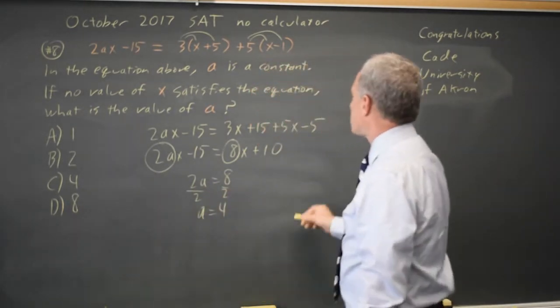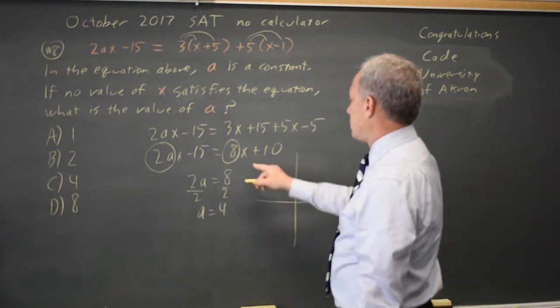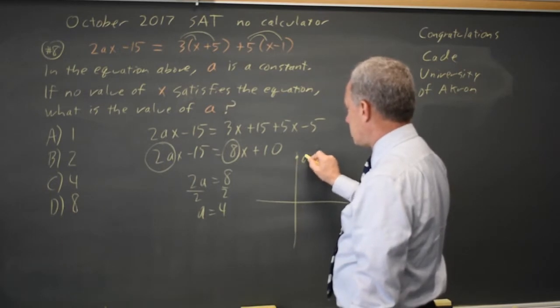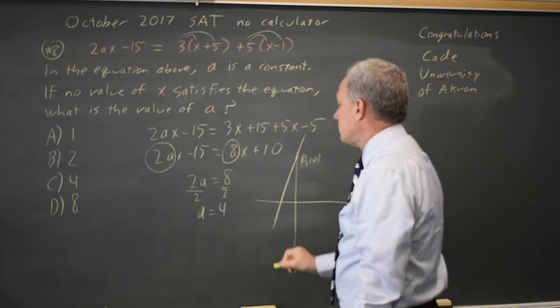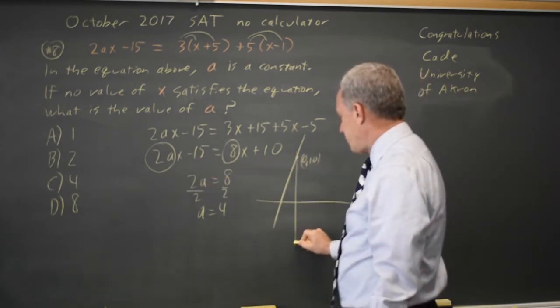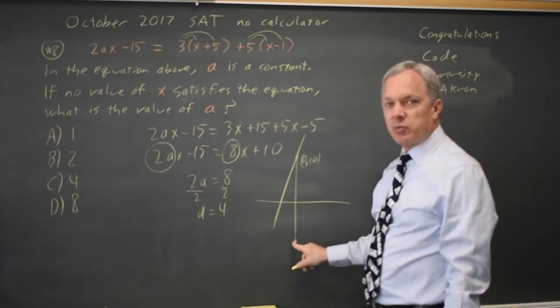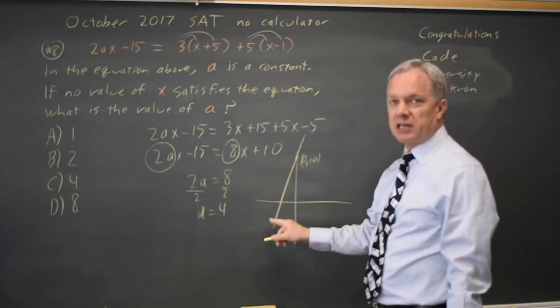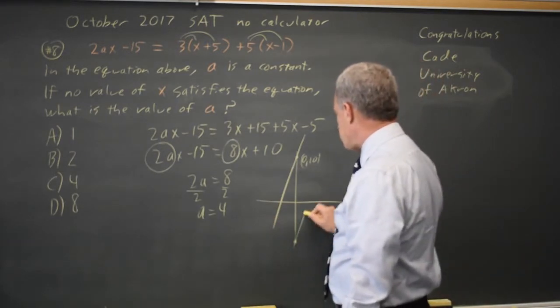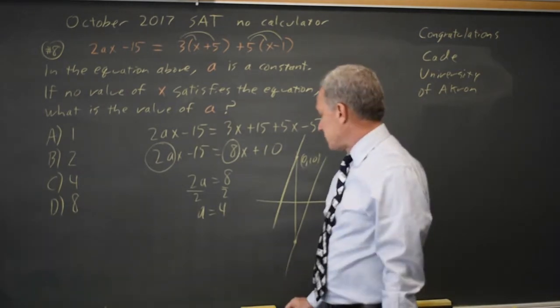If you think about graphing the right hand side, 8x plus 10, that's a y-intercept of 10 with a very steep positive slope. The left hand side has a y-intercept of negative 15. If the line through that point intersects my first line anywhere, that point is the solution. So the line through that point must also have a slope of positive 8.